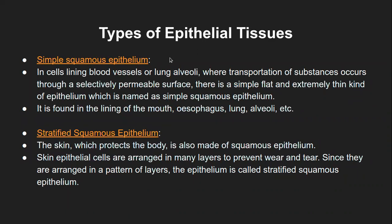The first type of epithelial tissue — simple squamous epithelium — consists of irregular-shaped cells arranged in a single layer. These are present in the inner lining of blood vessels and the lung alveoli. Their innermost lining will have this simple squamous epithelium. The function: it allows a selectively permeable surface for exchange of certain substances — transportation of substances across these walls. These cells are relatively simple, flat, and extremely thin compared to all other types.